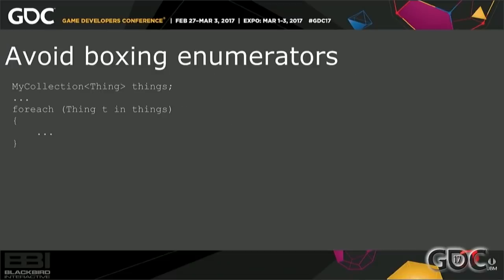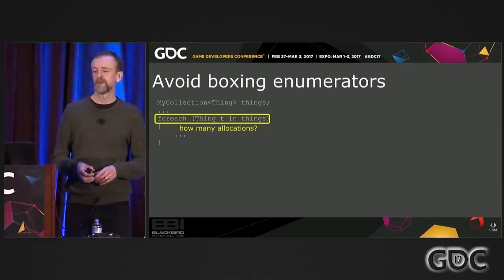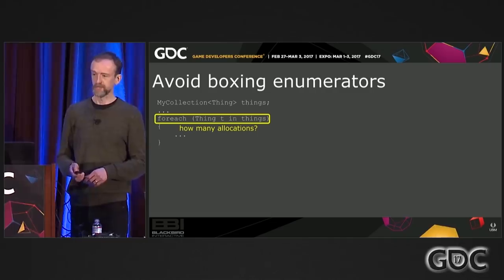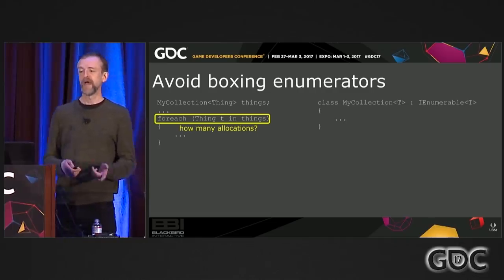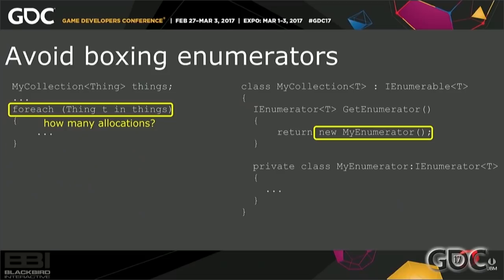Enumerators get special treatment. When you use foreach over a custom collection type, the number of allocations depends on how the collection implements IEnumerable. If you implement a private enumerator class with a GetEnumerator method, you typically get an allocation for the enumerator object on each foreach.